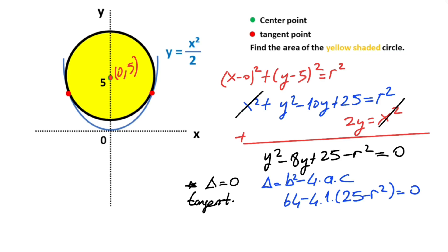So 64 = 4 × (25 - r²). If we simplify the expression, therefore r² = 9.